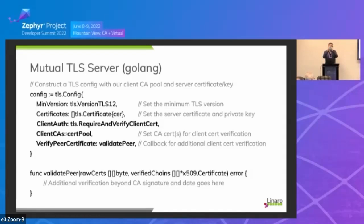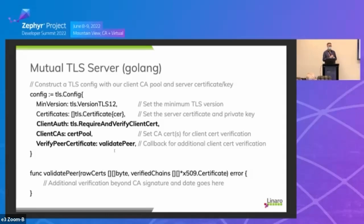There's an optional callback called verify peer certificate, where we pass in a function called validate peer. That gives us an opportunity to do additional verification on incoming requests. By default, the TLS stack checks two things: that the client device has been signed with the expected CA, and that the certificate isn't expired. That's not enough in the real world — you're going to want to do additional checks, like checking a database to see if the certificate has been revoked, if the device was stolen, or if the device has been deprovisioned. So validate peer is your opportunity to do additional verification work.